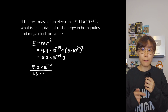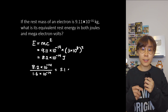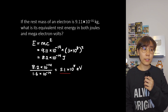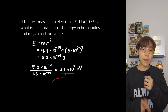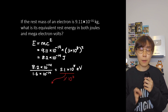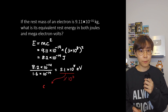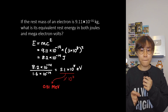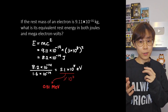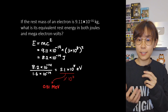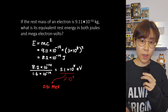That brings us to 5.1 times 10 to the 5 electron volts. Let's turn this into mega electron volts by dividing by 10 to the power of 6. So the electron's rest energy is 0.51 mega electron volts. So here you go, the simplest way to understanding E equals mc squared.